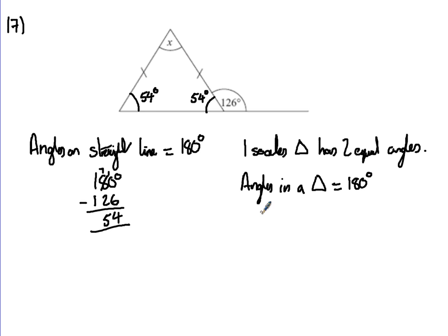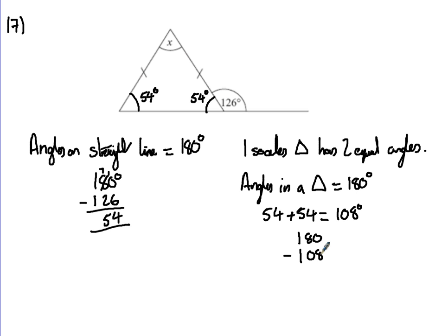So we then do 54 add 54 — adding those two angles together, that's 108. Then we do 180 take away 108 — borrow 1 from the 8, so it's 10 take 8 which is 2, 7 take 0 which is 7, 1 take 1 which is nothing. So then we're left with x equalling 72 degrees. That's the solution.